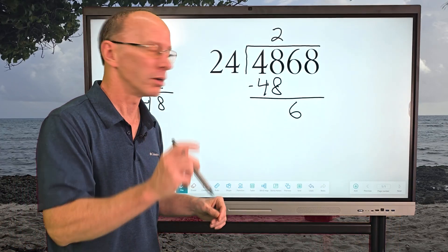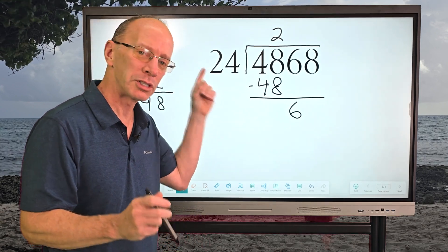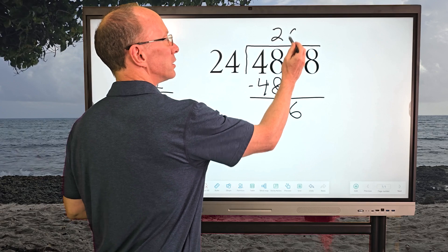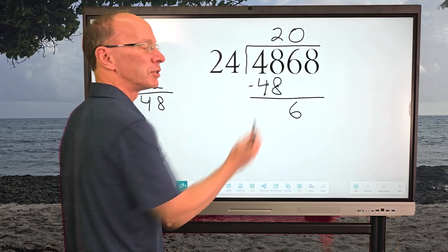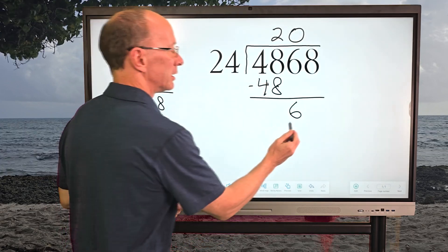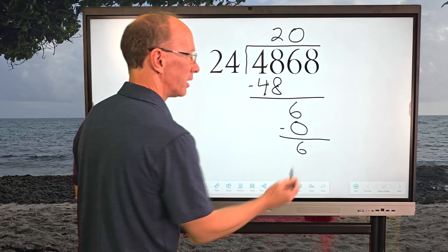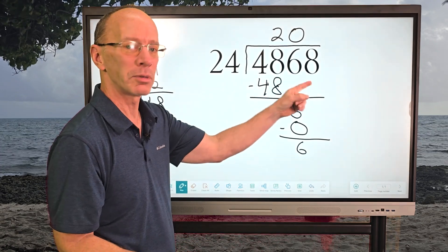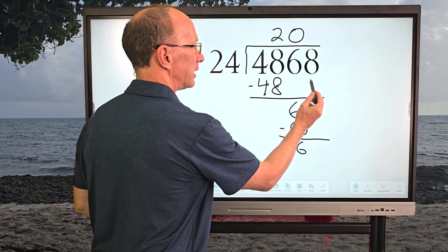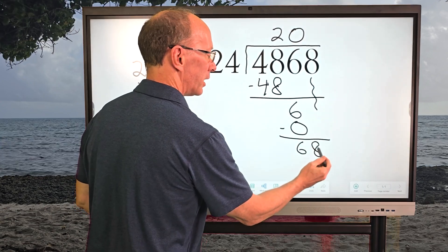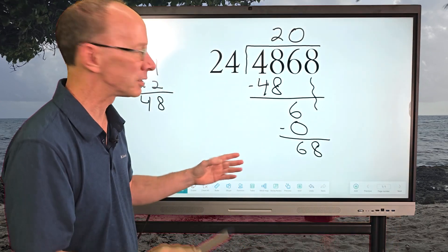But I can use 0, because 0 times 24 would be 0. So I'm going to put 0 right here. So 0 times 24 is 0. And now I subtract and bring 6 right here. And I bring the next number down, and that would be 8. So I'm going to bring that 8 all the way down to here. And now I start the whole process over.